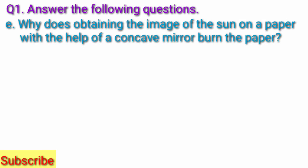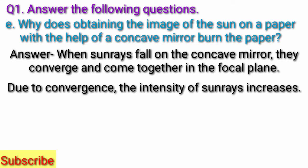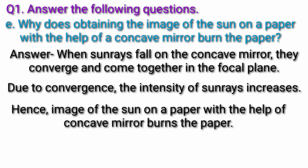Question E: Why does obtaining the image of the sun on a paper with the help of a concave mirror burn the paper? Answer: When sun rays fall on the concave mirror, they converge and come together in the focal plane. Due to convergence, the intensity of sun rays increases. Hence, the image of the sun on a paper with the help of a concave mirror burns the paper.